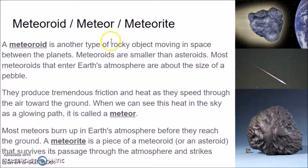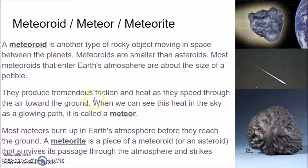Most meteoroids that enter Earth's atmosphere are about the size of a pebble. When a meteoroid enters Earth's atmosphere, it's flying very fast through space. When it gets into the atmosphere, that speed produces friction with the molecules of gases in our atmosphere, and that friction produces heat as they speed through the air toward the ground. We see this heat in the sky as a glowing path — that's called a meteor.